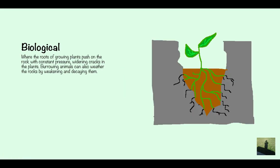Biological weathering. This is where the roots of growing plants push on the rock with constant pressure widening cracks in the plants. That's the most common type so that's what I've drawn the diagram of here. The roots as you can see causing cracks because it's constant pressure. You've got constant pressure on the rock and it's going to make it weaker. But then you can also have burrowing animals that can weather the rocks by weakening and decaying them. When animals burrow under the soil they can get to the rock and just by moving against them it's going to create weathering.